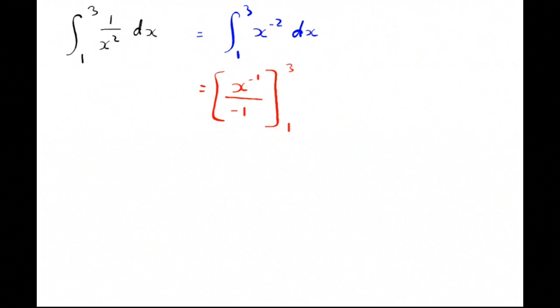It's easier to substitute if I write it in its other form, so I'm going to write that as -1/x. That's between 1 and 3. Sub in the 3: I get -1/3. Sub in the 1: -1. So -1/3 - (-1) = 1 - 1/3 = 2/3.